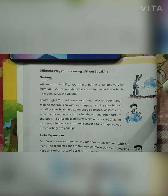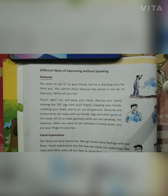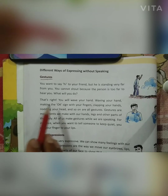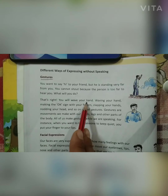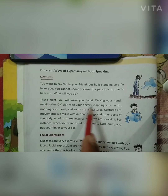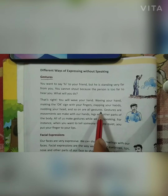For example, when you are going out and you saw your friend standing there, you cannot shout because everyone is watching you. So what do you do? You wave your hand — hi, how are you — like this, you wave your hand. Waving your hand, making the okay sign with your fingers, clapping your hands, nodding your head and so on are all gestures.